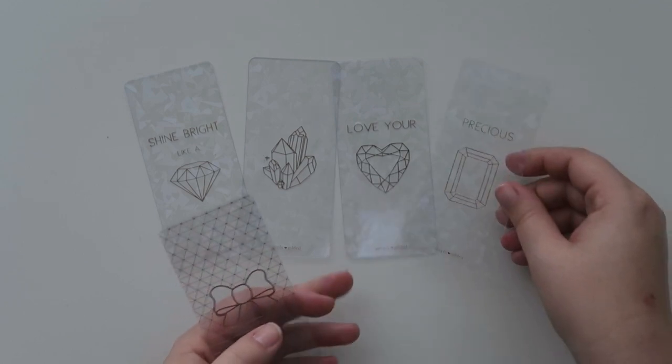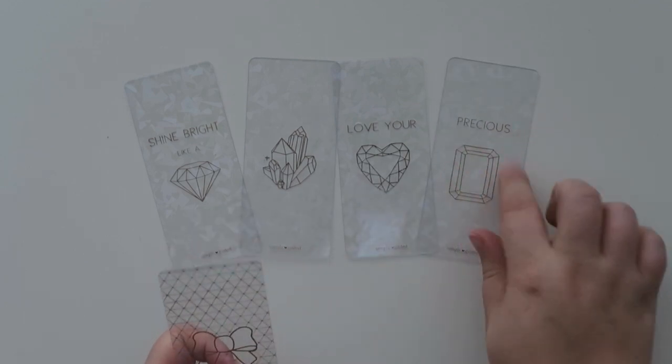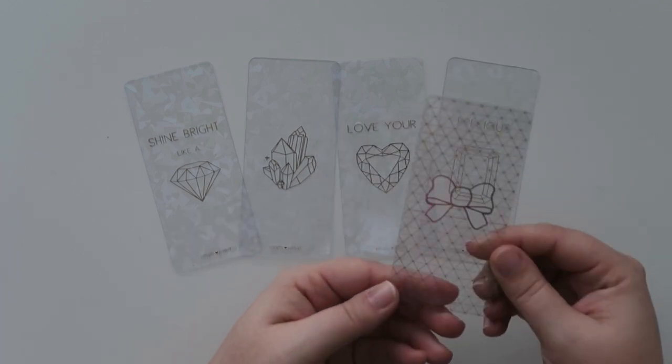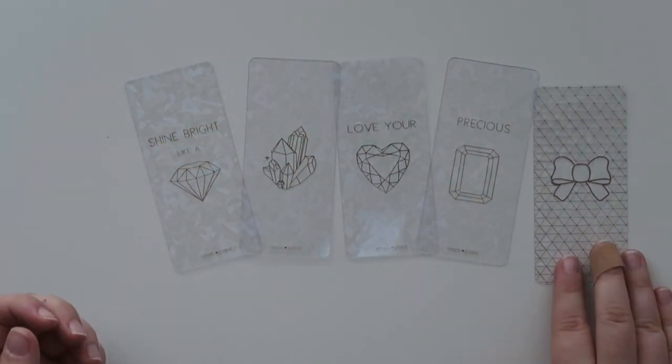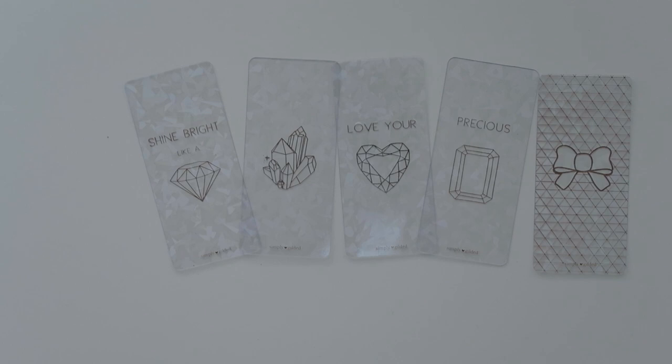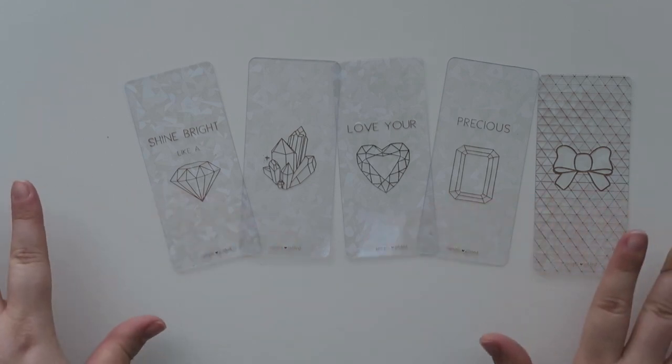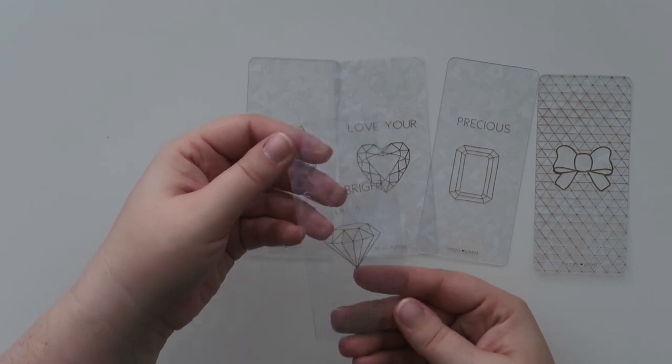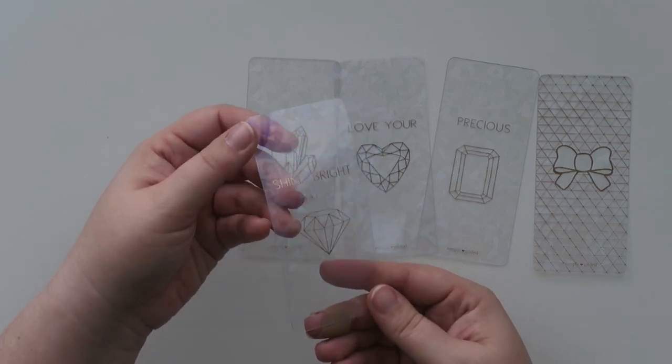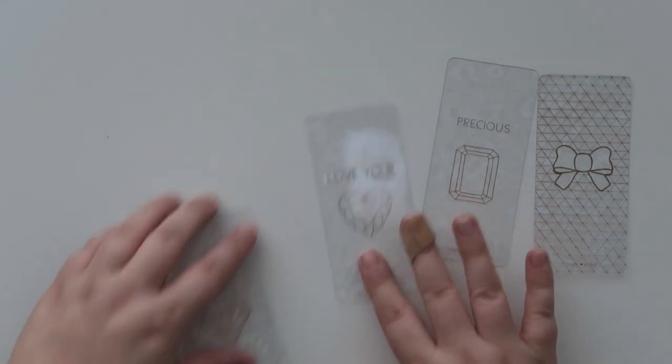And then this says love your heart and a gem. And this says precious with like the little emerald cut gem. And then you've got the signature bow from simply gilded as well, all foiled in the rose gold. And then it all has that kind of crackled gem overlay as well. So those are really cute.